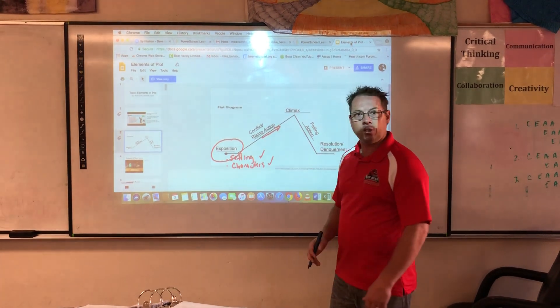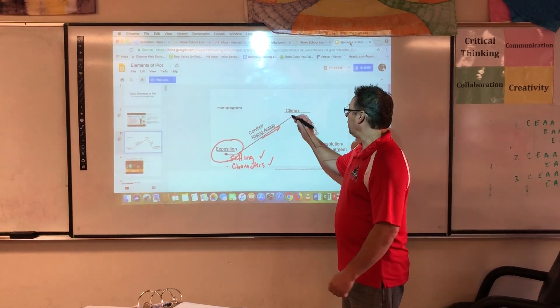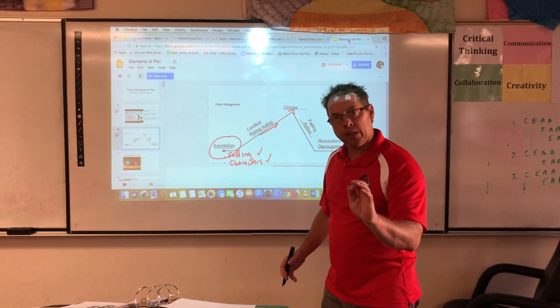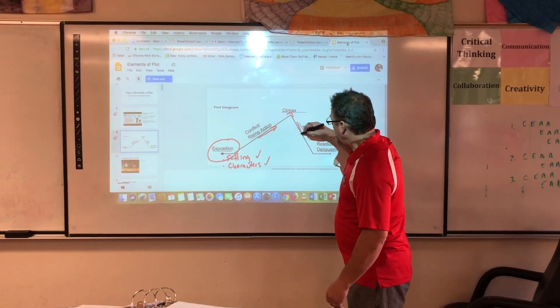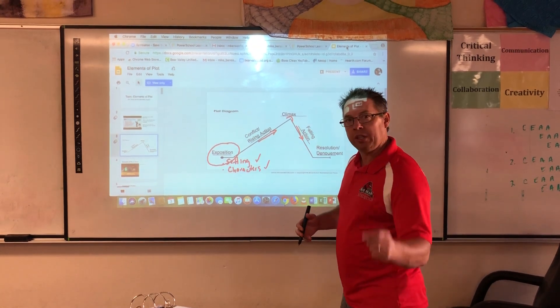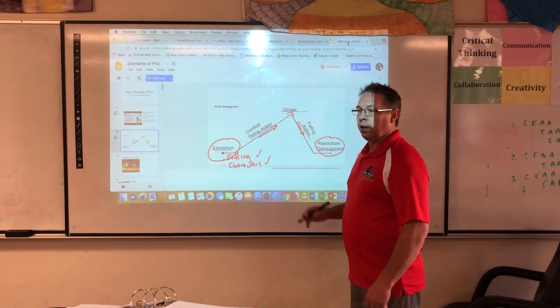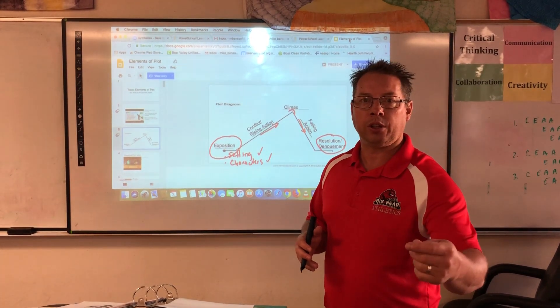The conflict is the rising action. That's the problem in the story, and you'll find a definition for that. The climax is the highest point of the story, and we will look more closely at each of these elements. The falling action are the consequences, the immediate consequences of the climax, and then the resolution. We'll take a closer look at all these elements in the days and weeks to come.